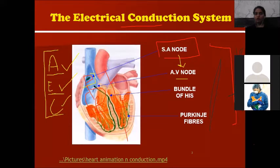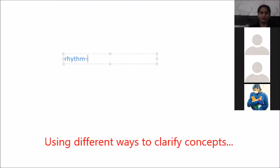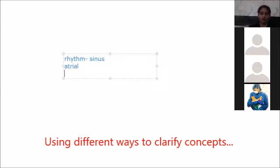The AV node, or atrioventricular node, is located at the junction between the right atrium and right ventricle. From here, the bundle of His is stimulated. There are three types of cardiac rhythm: sinus rhythm, atrial rhythm, and ventricular rhythm.